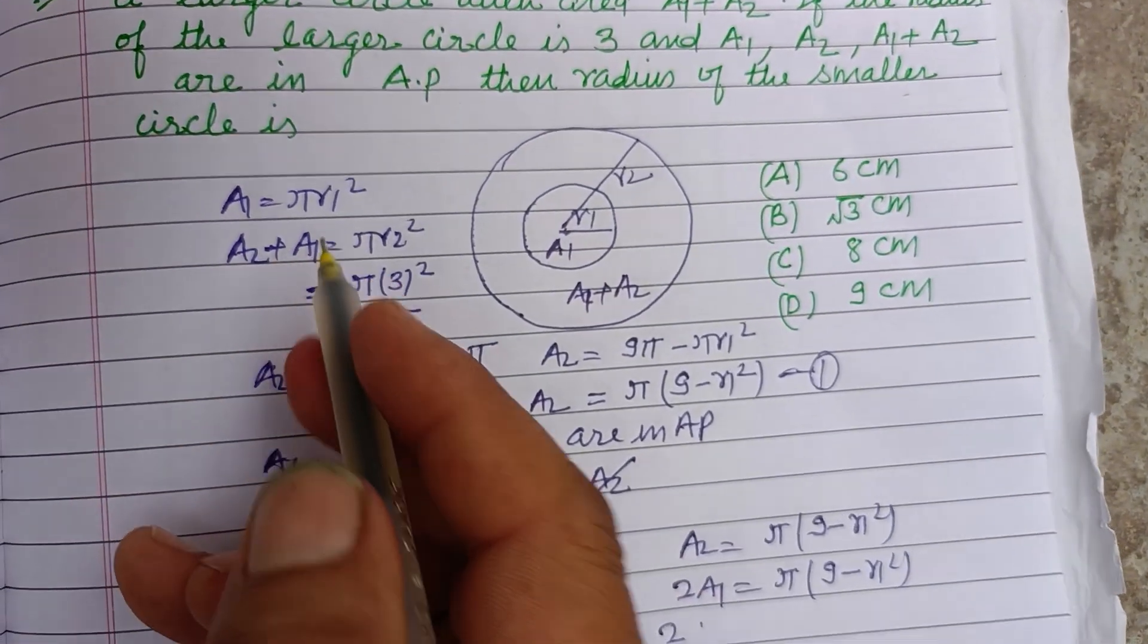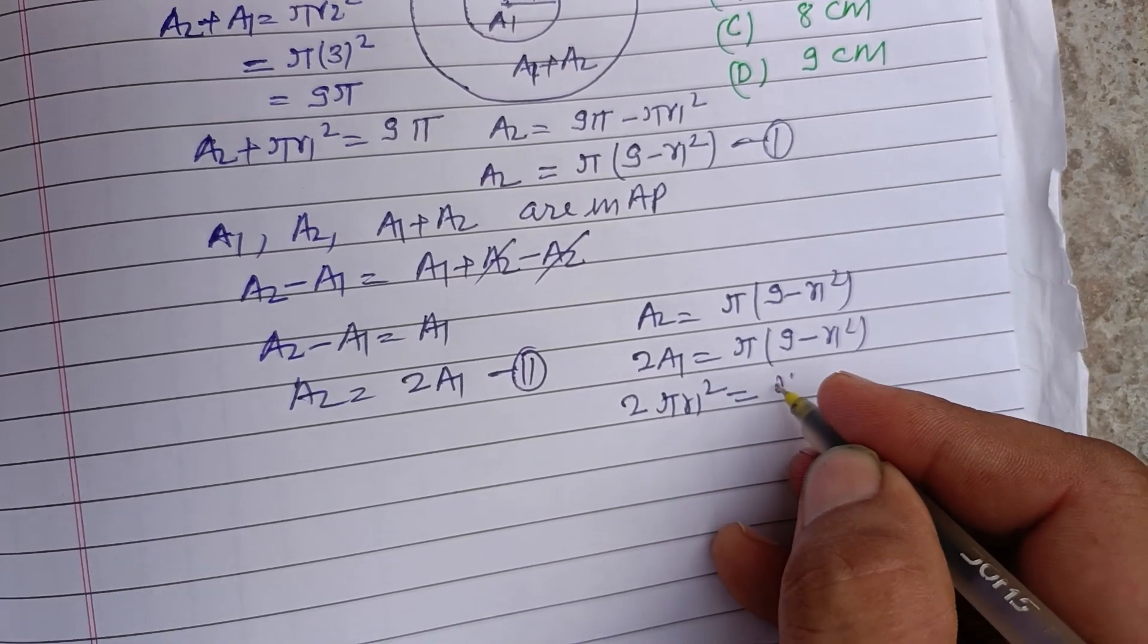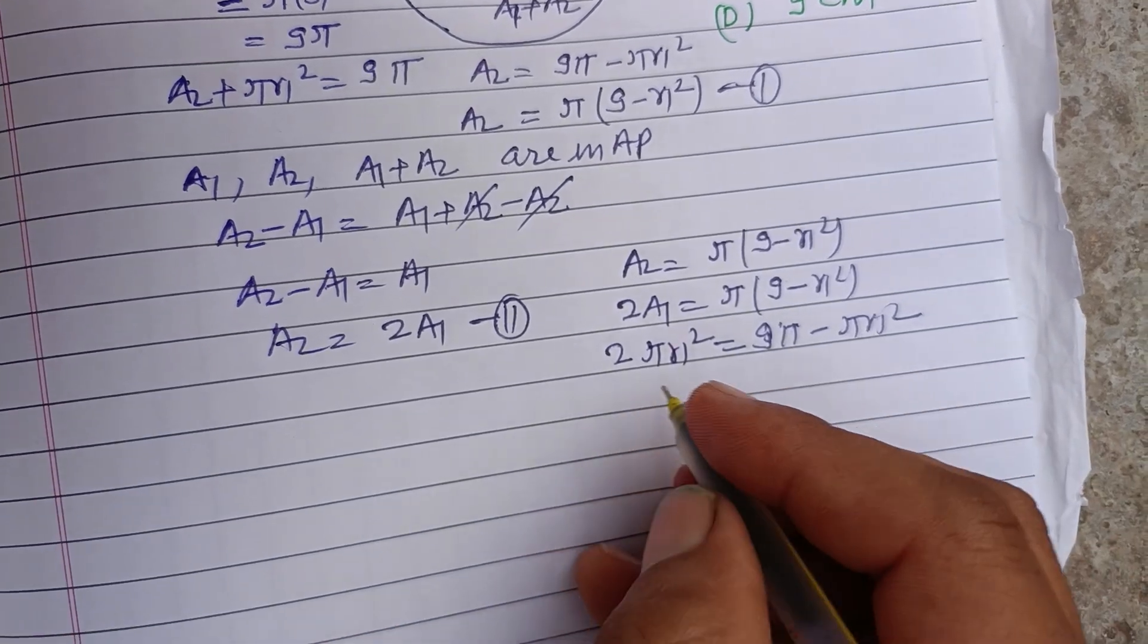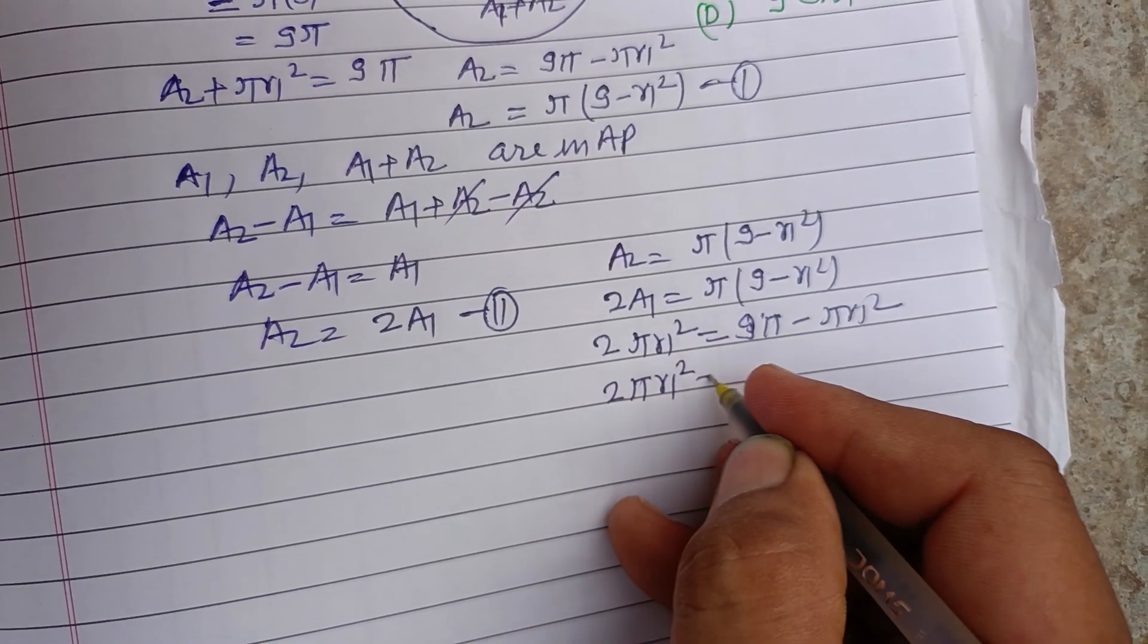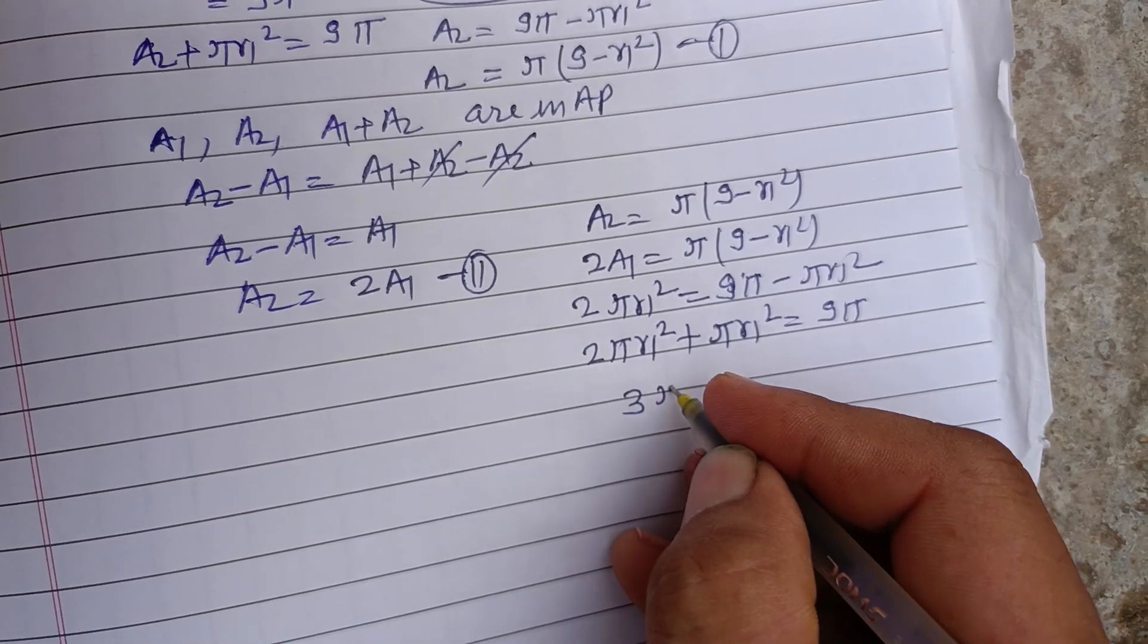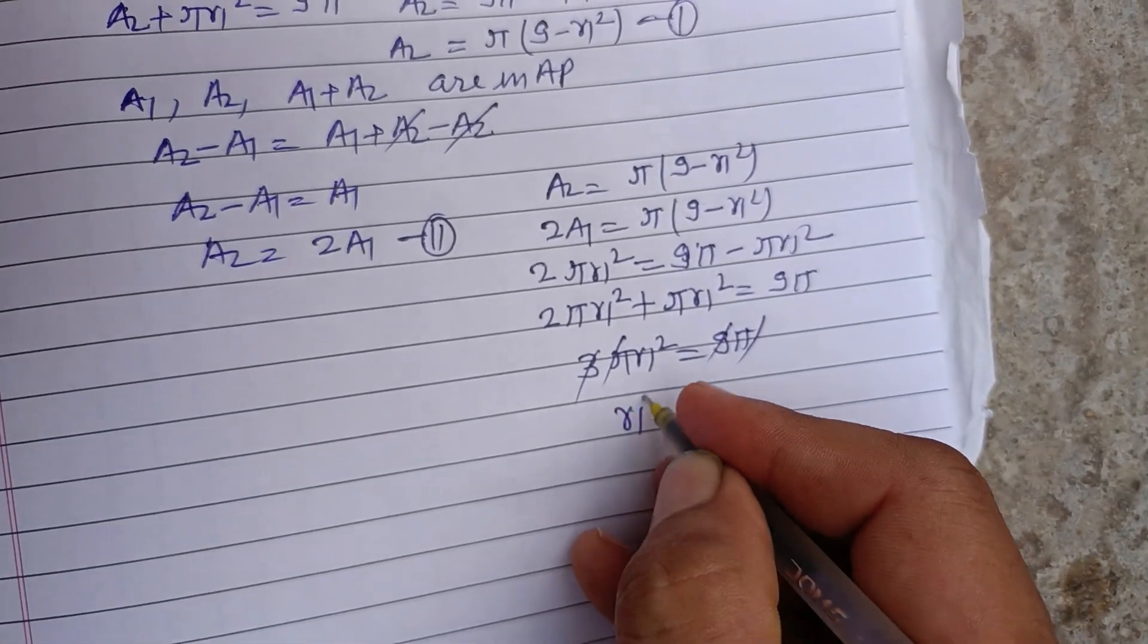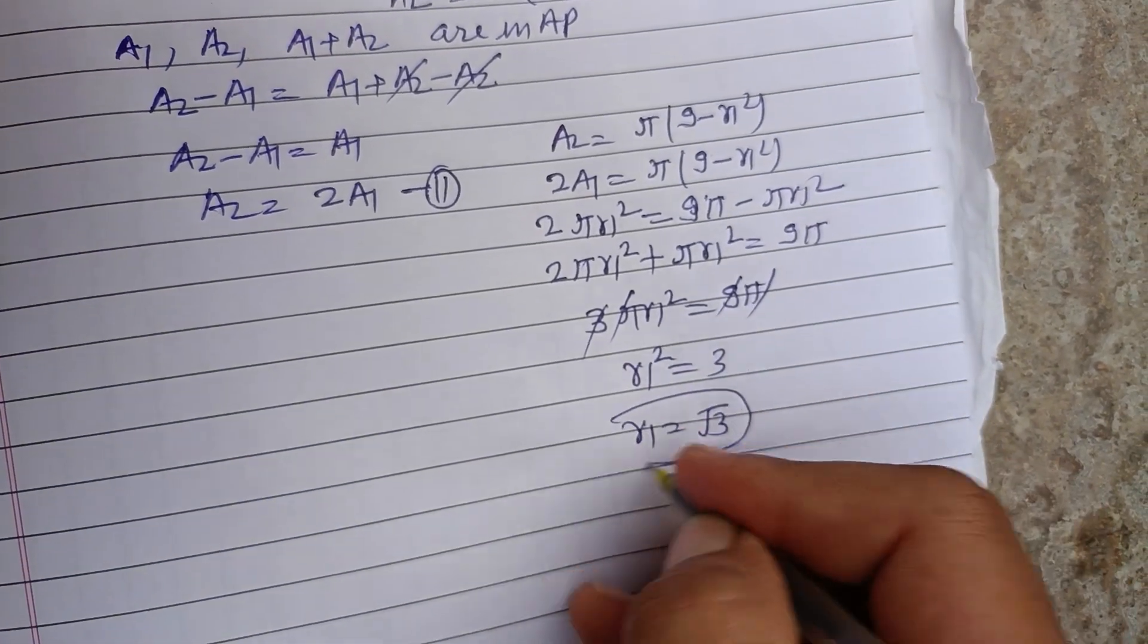And 2 A1 is pi r1 squared. So 9 pi minus pi r1 squared equals 2 pi r1 squared. Taking this to the other side, 2 pi r1 squared plus pi r1 squared equals 9 pi. That is 3 pi r1 squared equals 9 pi. Pi cancels, 3 into r1 squared equals 9, r1 squared equals 3, r1 equals root 3. So the radius of the smaller circle is